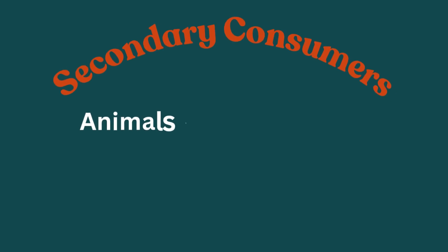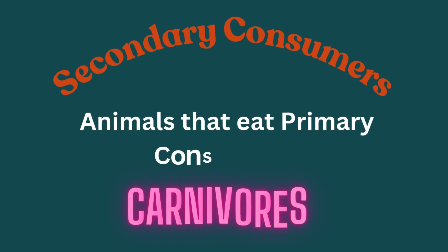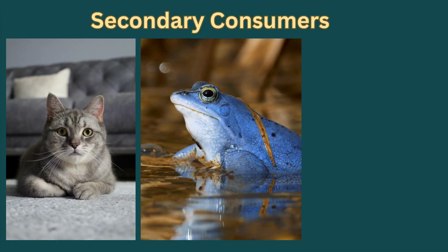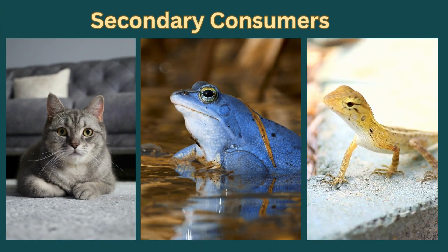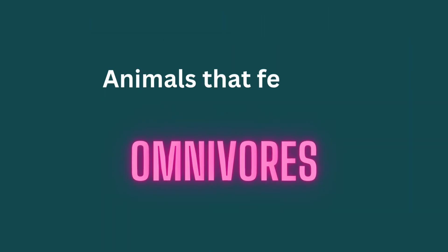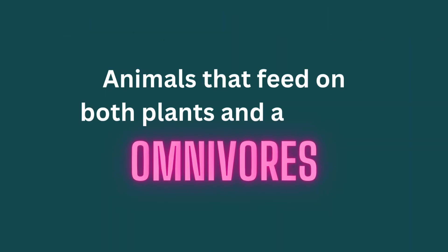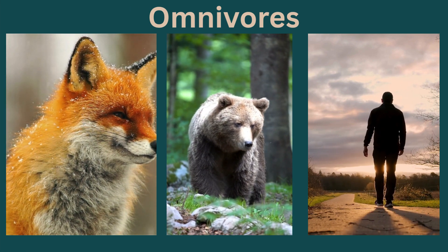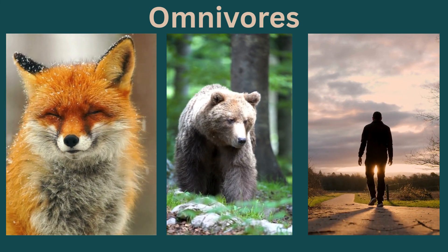Second, secondary consumers: animals that eat primary consumers, also called carnivores, as they feed on other animals. For example, cat, frog, lizard, etc. Animals that take food from both plants and animals are called omnivores. For example, fox, bear, human, etc. They can be primary or secondary consumers.